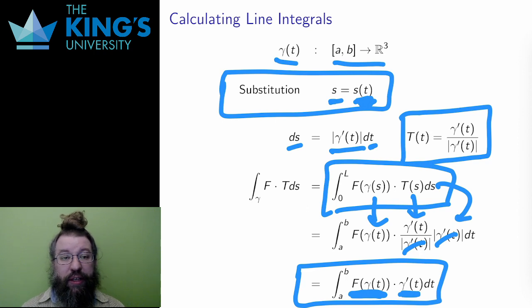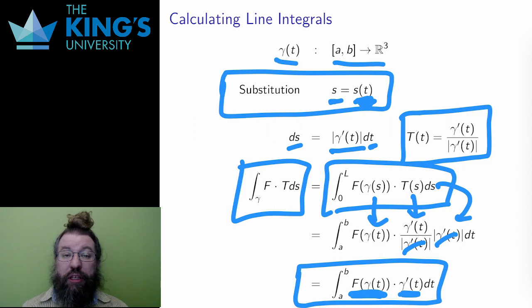But this is very convenient, since the proof here means that any parametrization that covers the same distance will give the same line integral. The line integral is only a product of the curve, not the parametrization of the curve. It only depends on path, not the speed of movement along the path. It is independent of parametrization.